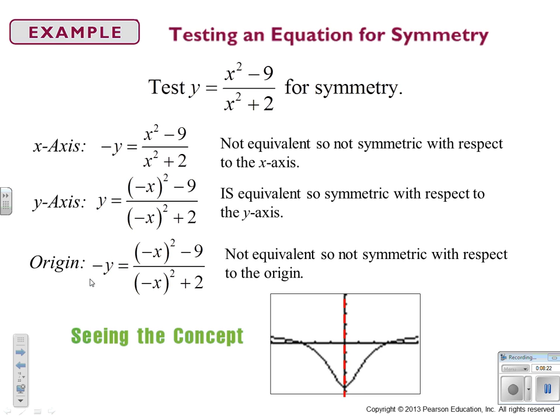And then this is what the graph looks like. So if you look, I can fold this picture along the y-axis, and it'll overlap itself. But that's not true if I fold it along the x-axis, nor does it have the diagonal quadrant symmetry that we expect from origin symmetry.